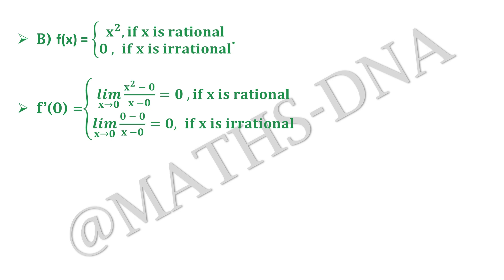Similarly we go with option B. Option B says f(x) equals x square if x is rational and 0 if x is irrational. So we need to find its value, that is f'(0) equals limit x tends to 0 of [x square minus 0] upon [x minus 0] equals 0 if x is rational. x gets cancelled out from the numerator and the denominator and the remaining gives us 0.